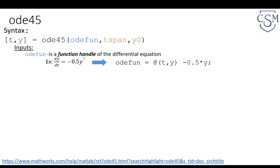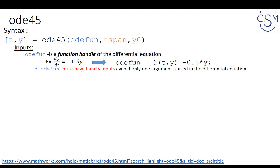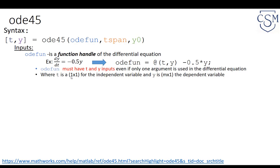For example, if we have our model differential equation, the function handle would be @(T, Y) -0.5*Y. Notice that T appears even though time does not show up in this differential equation. That is because for ODE45, you must have T and Y as inputs even if only one argument is used. ODE45 assumes the first variable in your function handle is the independent variable and the second is the dependent variable. Y must be M-by-1, and the independent variable T must be 1-by-1.